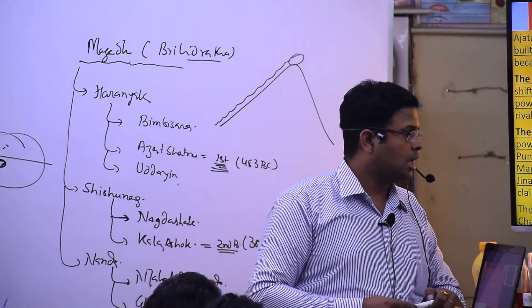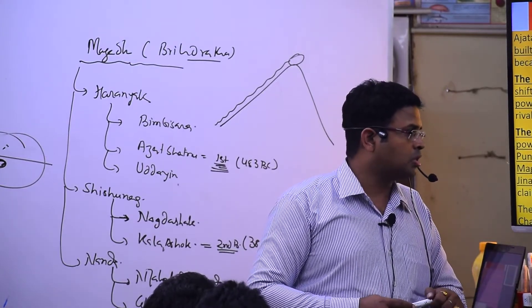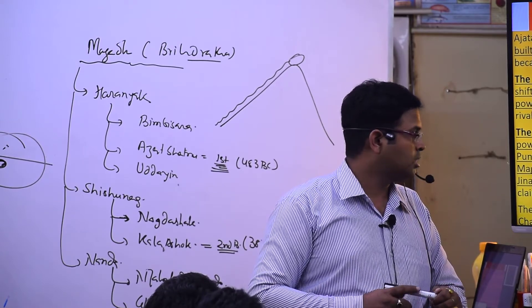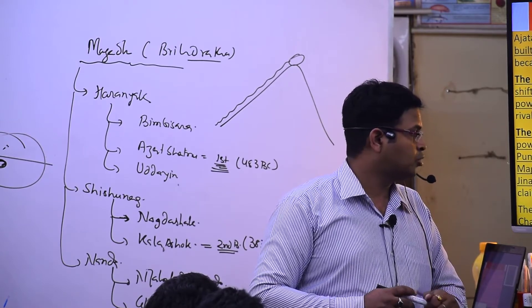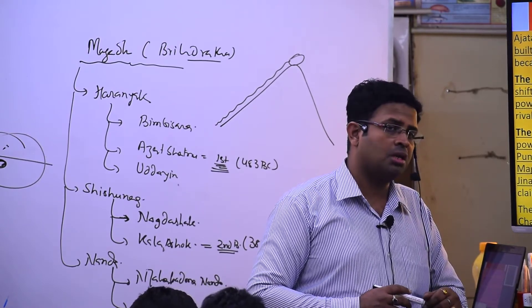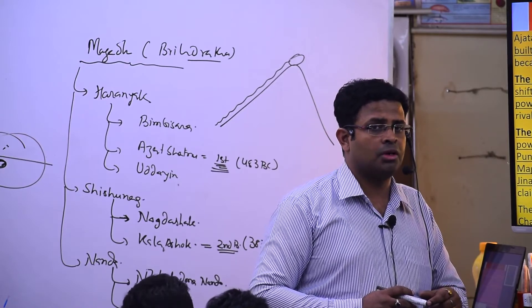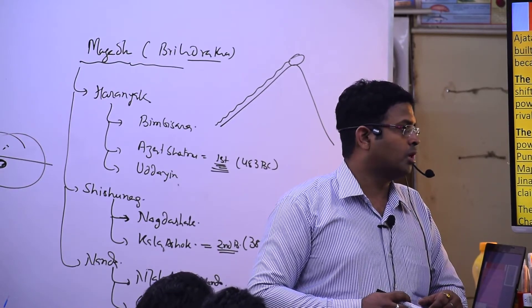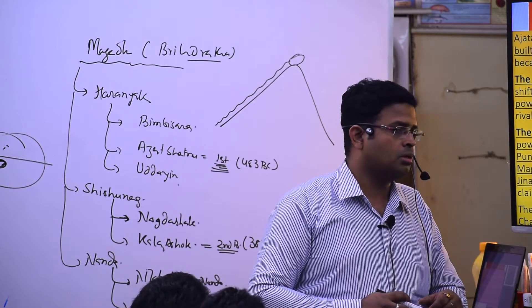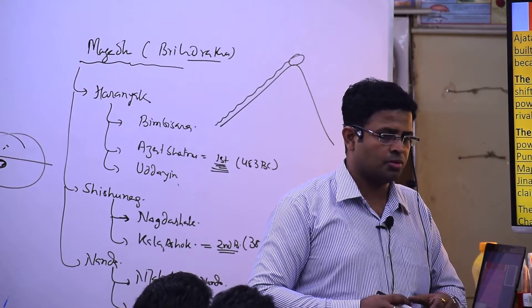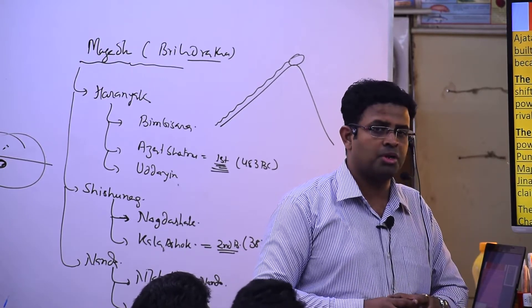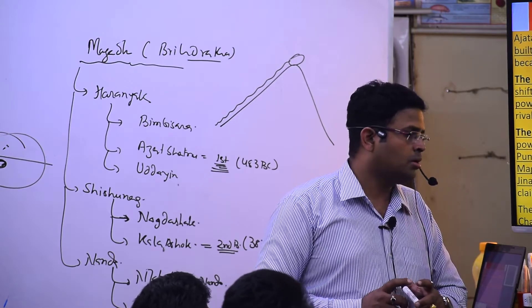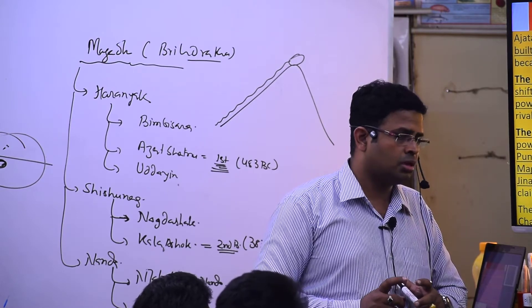This is like a victory trophy. All this took place in the reign of Mahapadmananda, who claimed: 'I am the strongest of all Kshatriyas and the sole sovereign who destroyed all other ruling dynasties.' The Nandas were the first non-Kshatriya rulers.